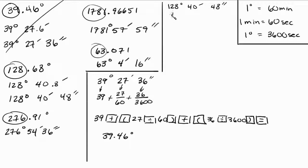Okay, so 128, 40, 48. Bring the 128 down, plus this 40 represents 40 minutes of one degree, which is 60 minutes. Then this is 48 seconds out of one degree, which is 3600 seconds. Okay, so ready? Let's do this together.